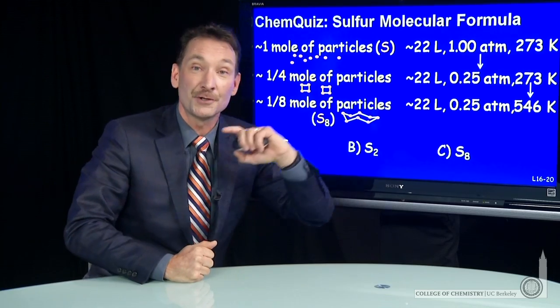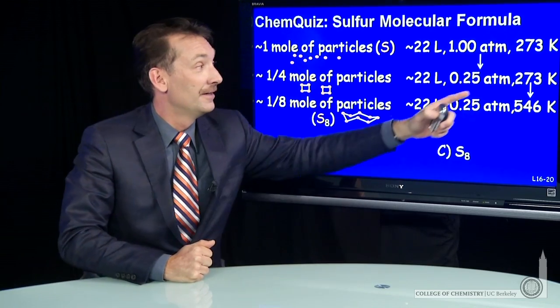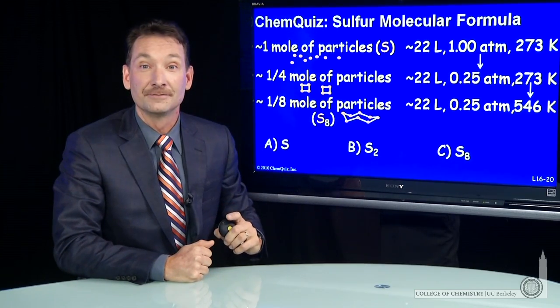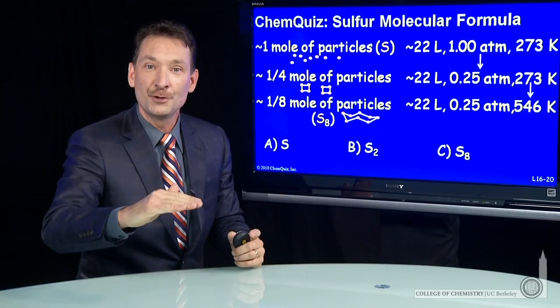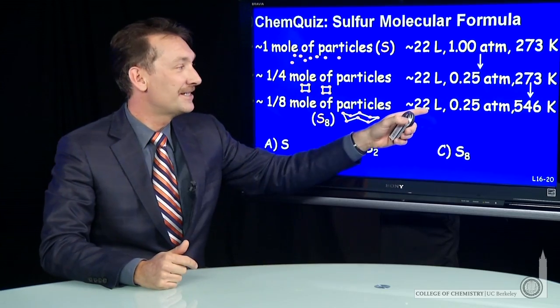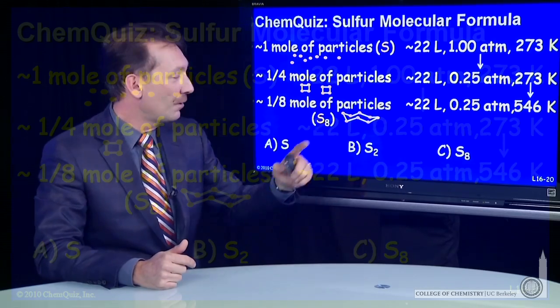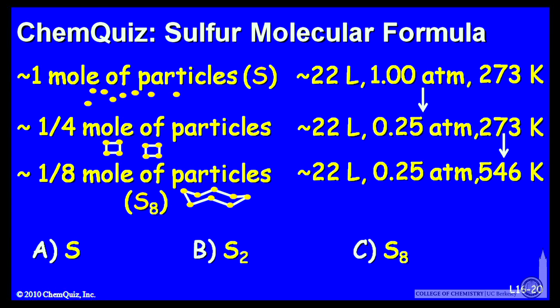Now in this sample, the temperature was also twice the standard temperature. How do I get a factor of two in temperature and stay at a quarter of the pressure and 22 liters? Well, I have to go to groups of eight particles. So the ideal gas law makes sense if that mole of particles is in groups of eight.